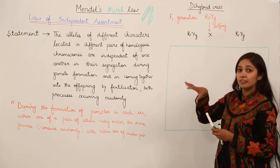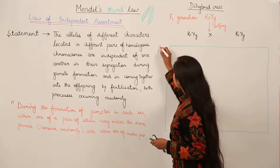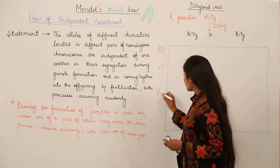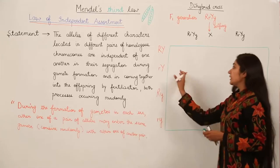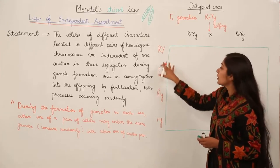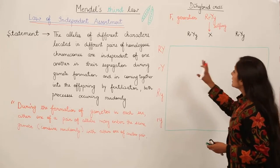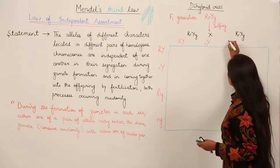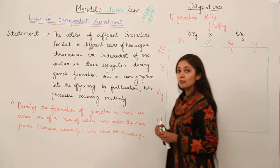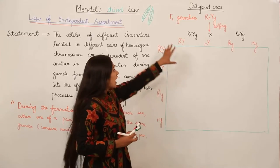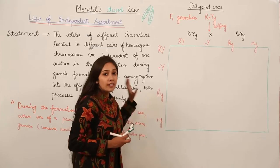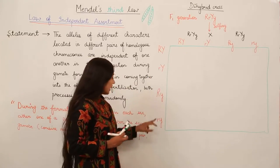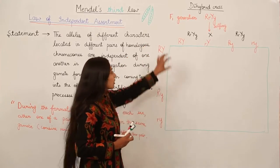So let us see the possible combinations we have discussed. It can be capital R, capital Y. It can be small r, capital Y. It can be capital R, small y. Or it can be small r, small y. These are the maximum four possible outcomes when we talk about a pair of alleles. The same four pairs you write on both sides of the Punnett square.